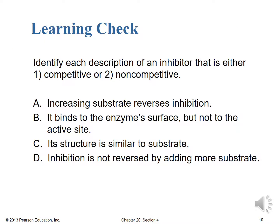We're already at the end of this fourth lecture on Chapter 20, so it's time for a learning check. You're asked to identify each description of an inhibitor as either competitive (1) or non-competitive (2). For A, B, C, and D, decide which type applies. Pause the video here if you need a moment, and when you're ready to check your work, start it back up. Good luck.